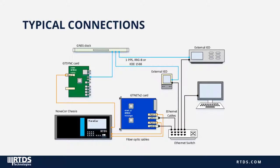A typical setup would include an external GNSS clock providing a time reference to the RTDS GT Sync card, which is connected to the central processor via fiber cable on a dedicated port on the NovaCore. That time reference is also provided to two external IEDs. The RTDS simulator's GTNet card receives simulated data via fiber cable and puts them onto the local area network via Ethernet, and the user's PC is also connected to the switch.